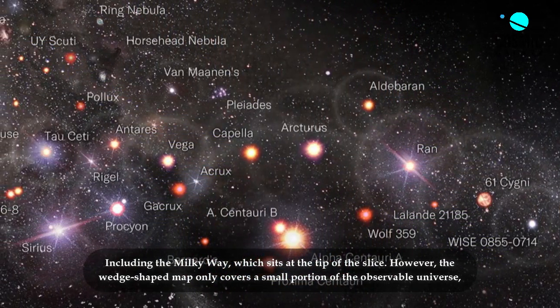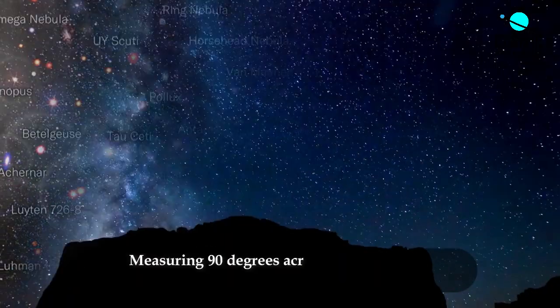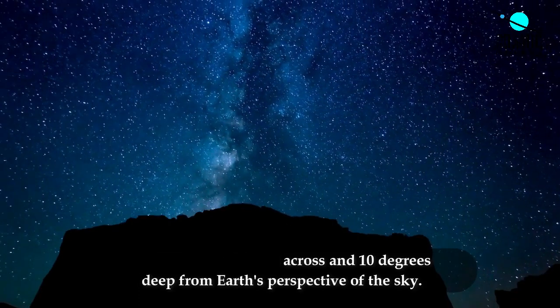However, the wedge-shaped map only covers a small portion of the Observable Universe, measuring 90 degrees across and 10 degrees deep from Earth's perspective of the sky.